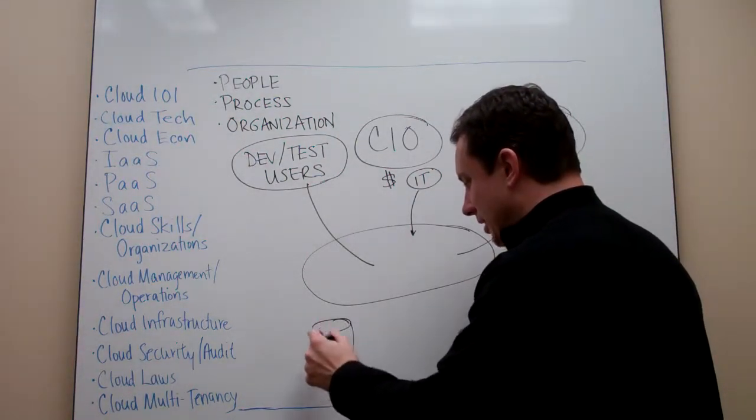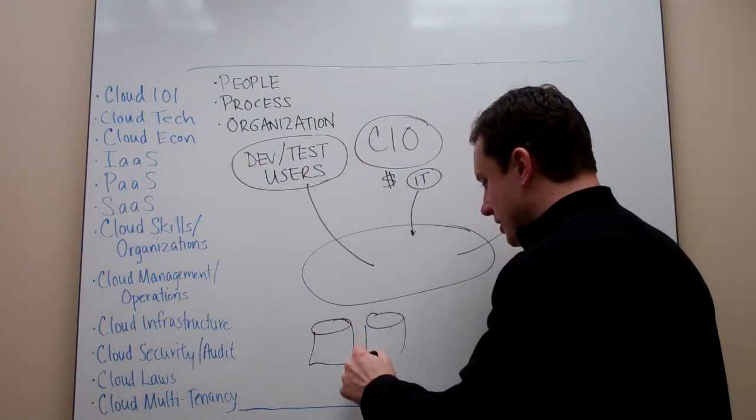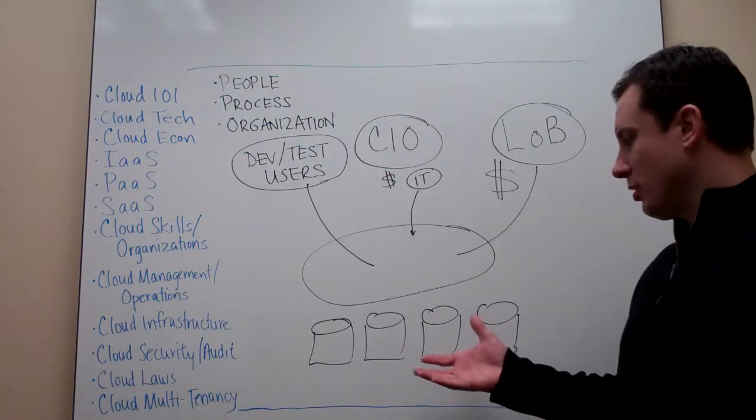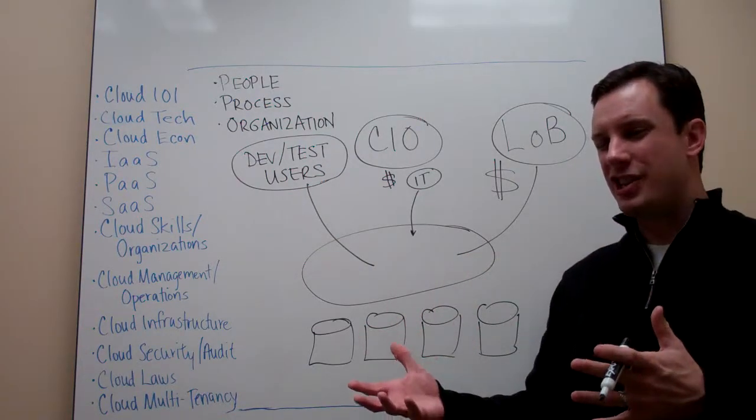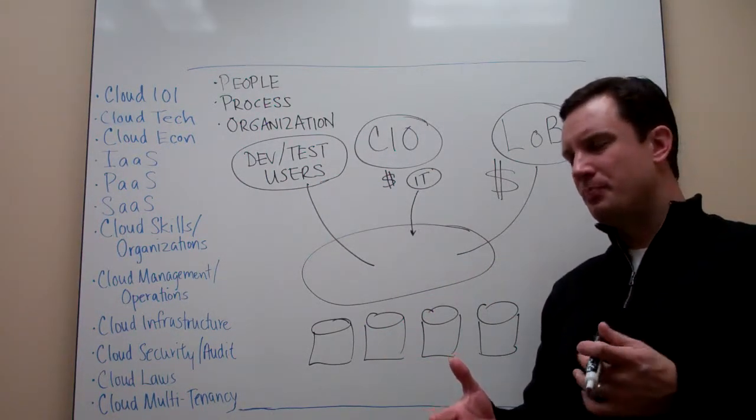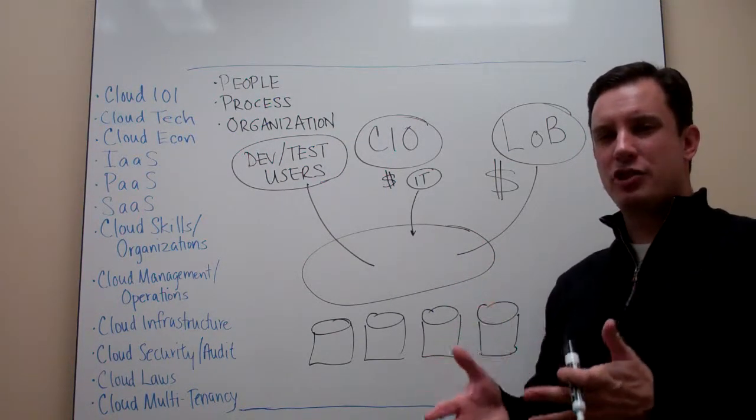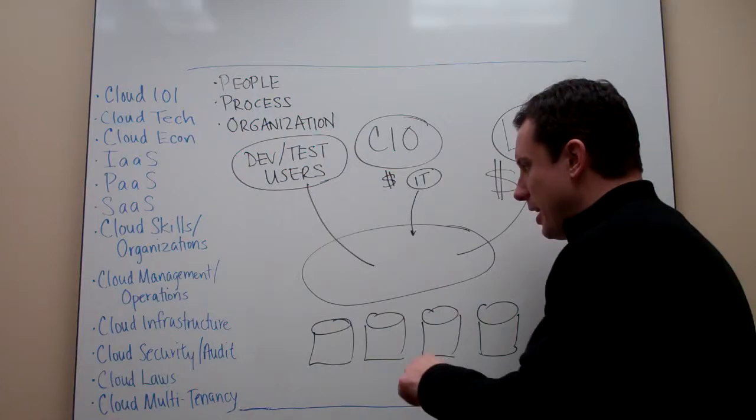So the challenge becomes, in the past, I had all these different silos. I had different organizations paying for different parts of what IT did, I had different organizations paying for resources that were on different depreciation cycles and different budgeting cycles. And so as the CIO, you're starting to say to yourself, how am I going to deal with this change?